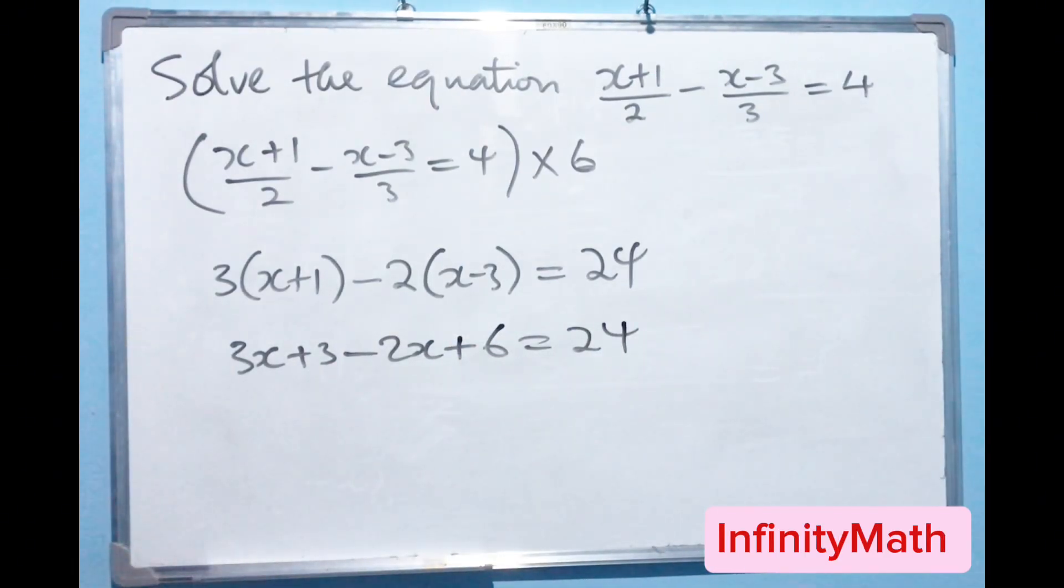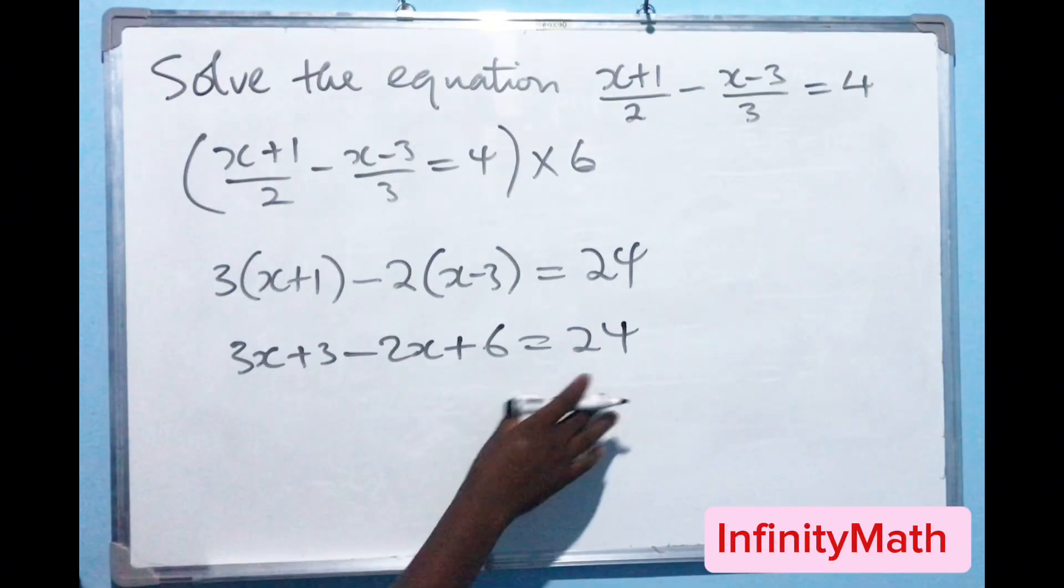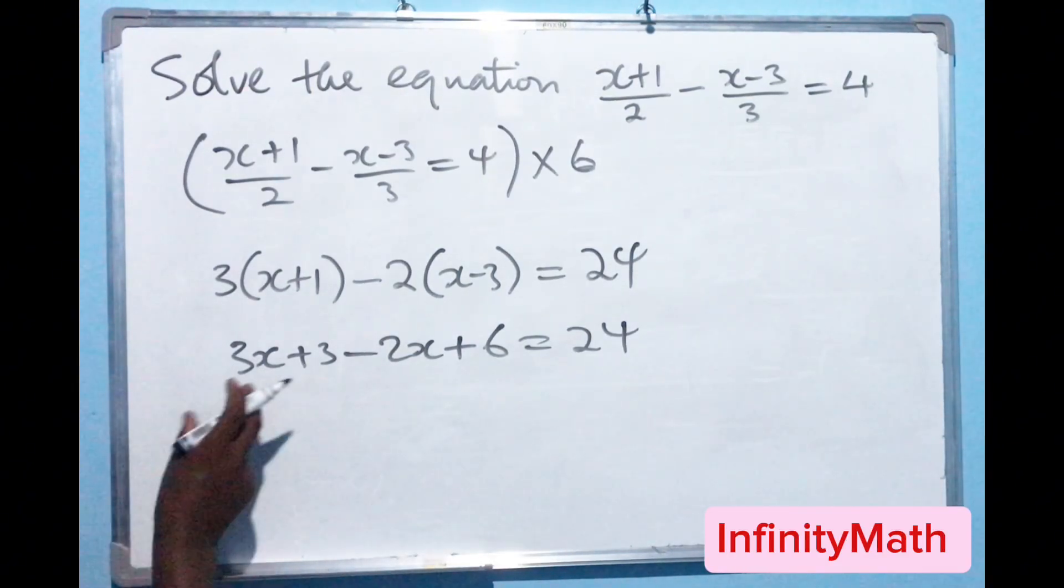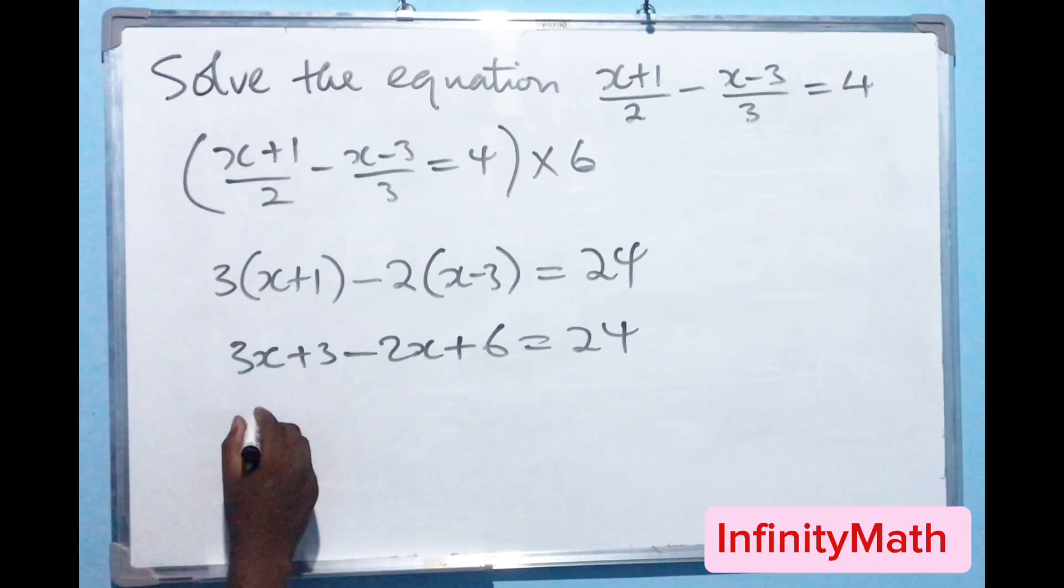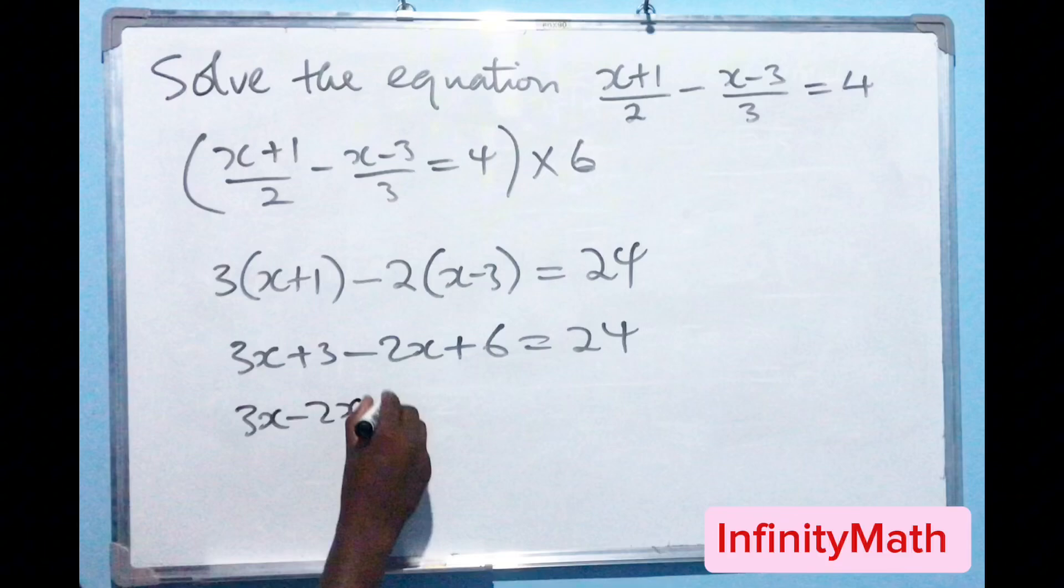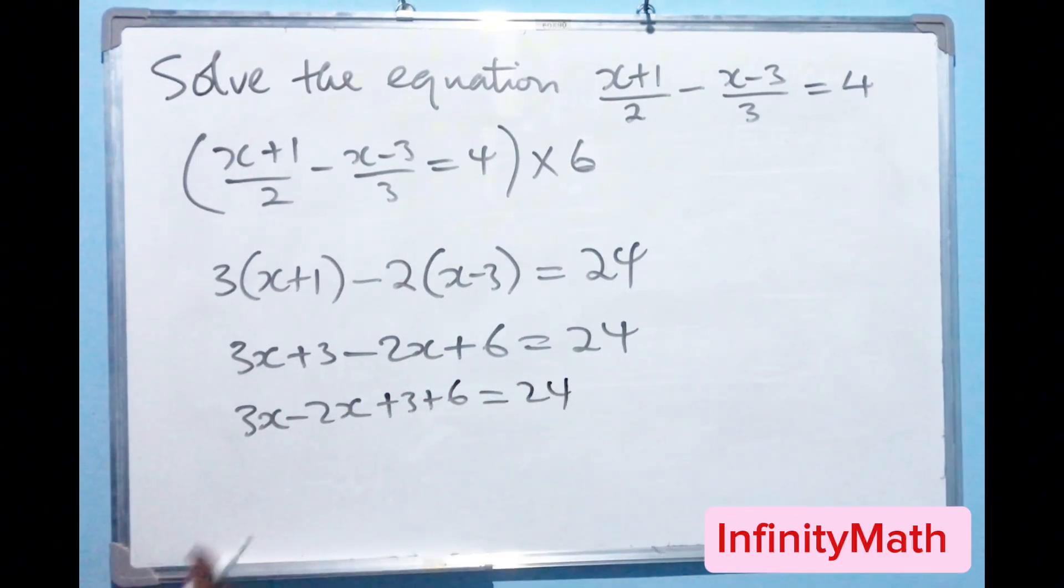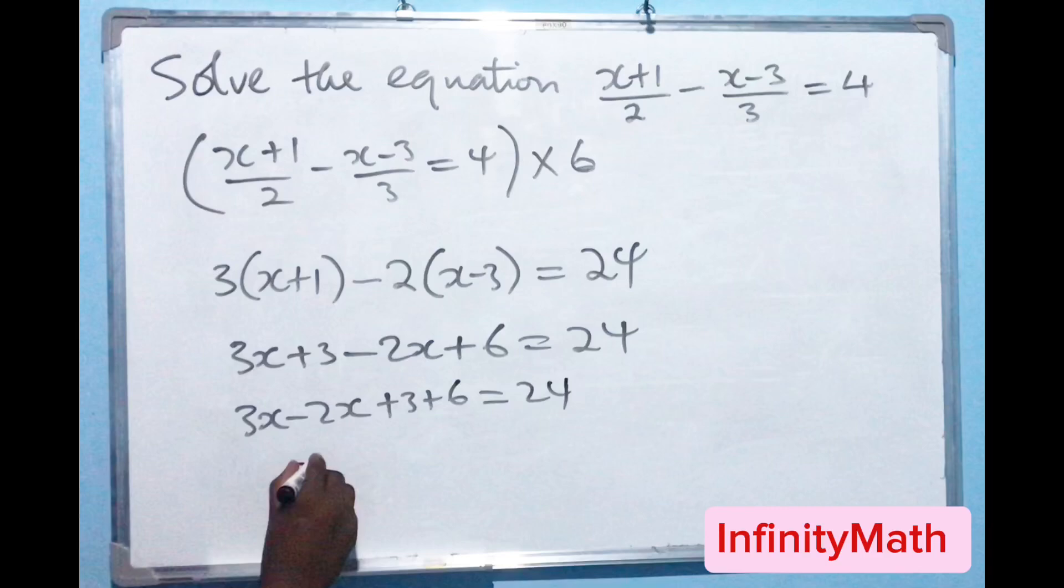Now it's easy. So what you do here you collect the like terms. The like terms that we have is 3x and 2x. So 3x minus 2x plus 3 plus 6 that should give us 24.